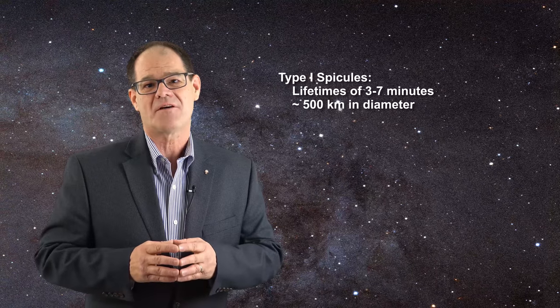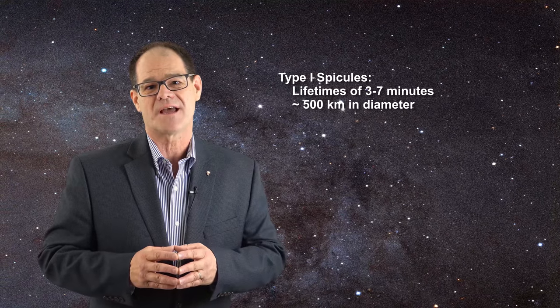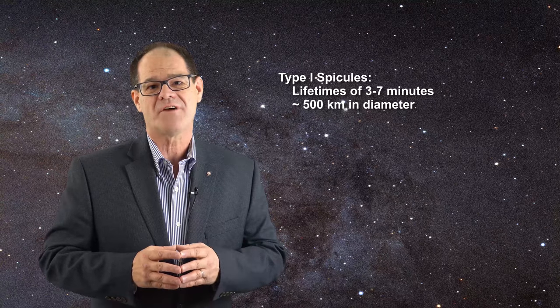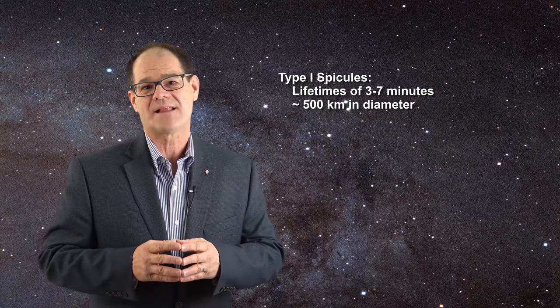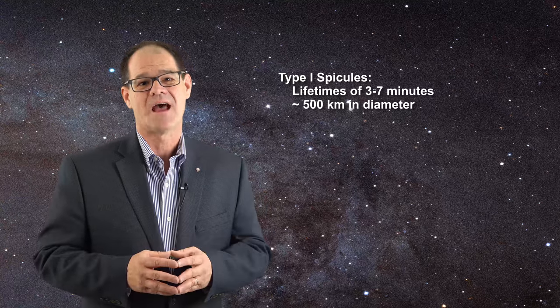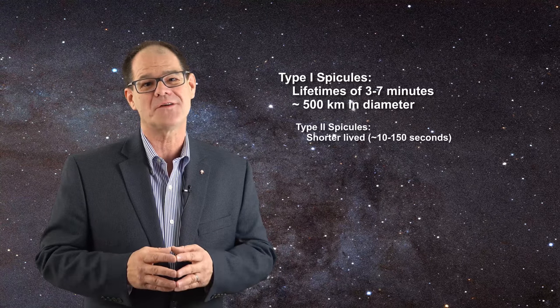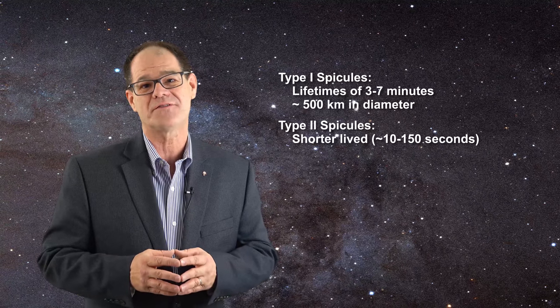There are two types of spicules currently recognized in astrophysics. Type 1 spicules have lifetimes of 3 to 7 minutes and are about 500 kilometers in diameter. They can move in jerky fashion up and down and extend laterally while expanding. Type 2 spicules are shorter lived, on the order of 10 to 150 seconds.